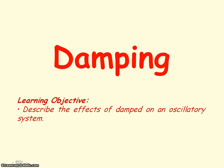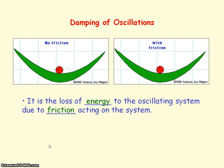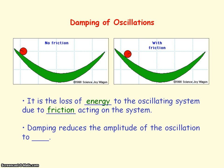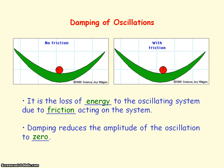We're going to be looking at the effects of damping on an oscillation. Damping is the loss of energy to an oscillation due to the resistive forces that act on the oscillation. As a result, the damping reduces the amplitude of the oscillation to zero — that is, the oscillation would return to its rest, its equilibrium position.